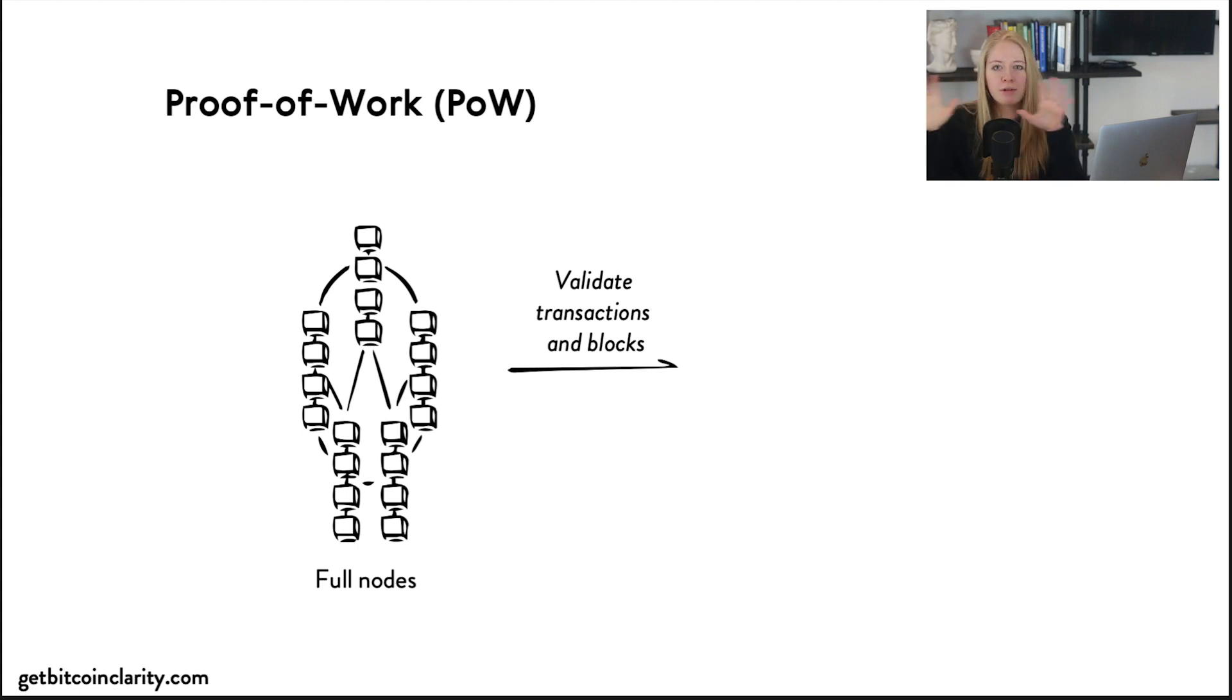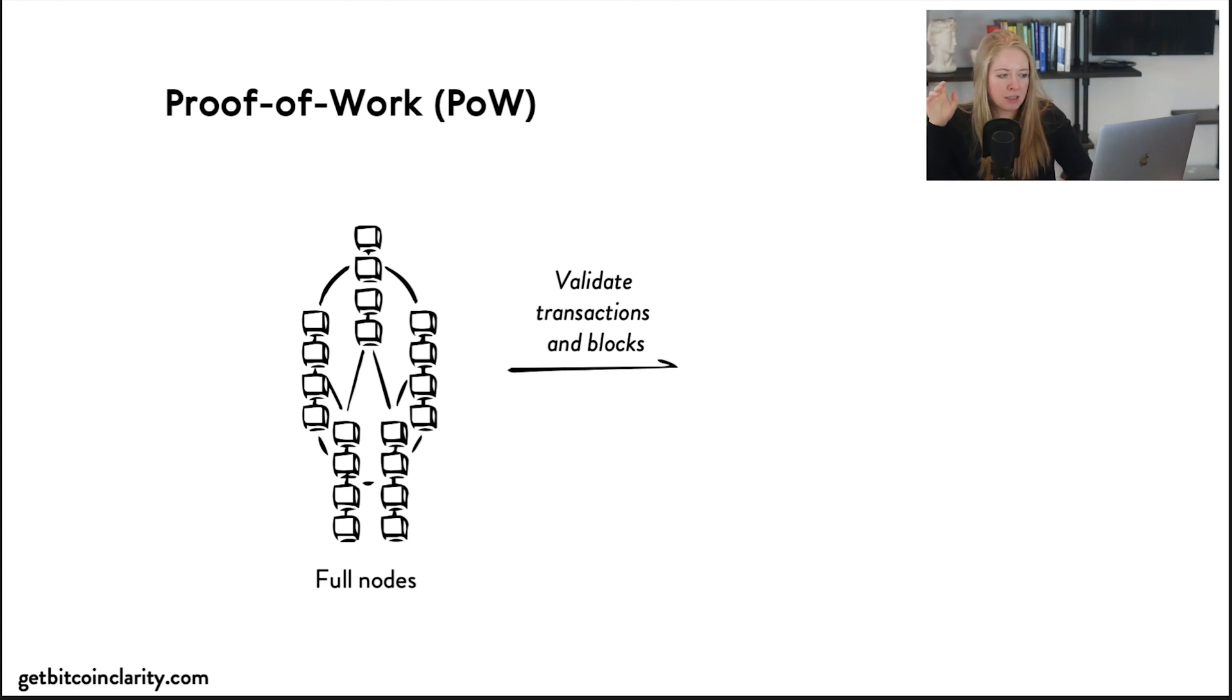There are two primary actors in proof of work: there are full nodes and there are mining nodes, which are pretty much just called miners. What these two entities do is that the full nodes validate and the miners do the work. Let me phrase it another way: miners do the work, full nodes check the proof.